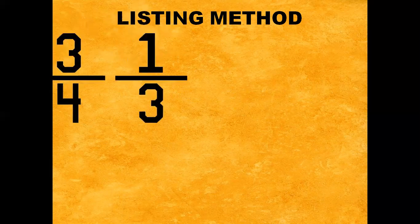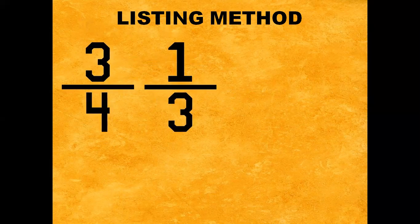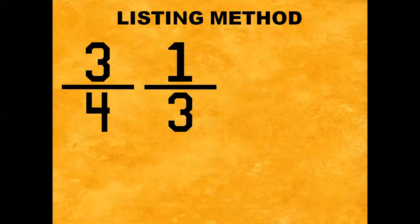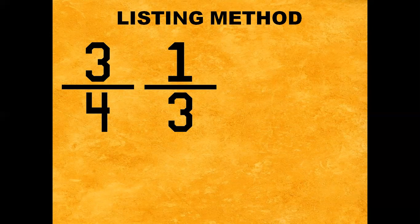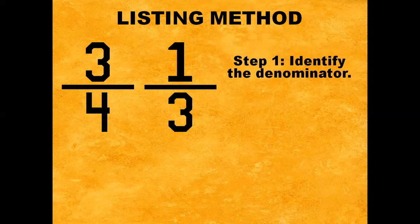Now for the Listing Method example, we have three-fourths and one-third. These two fractions are dissimilar, so we need to find their LCD. Step number one: identify the denominator. In three-fourths, the denominator is four. And in one-third, the denominator is three.